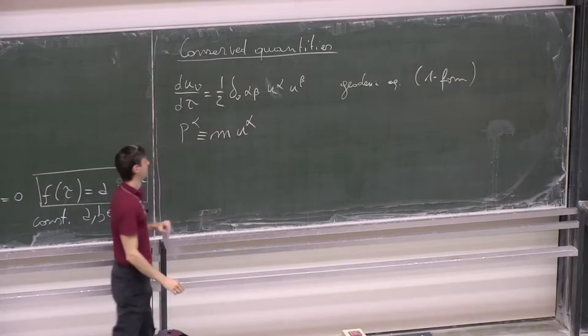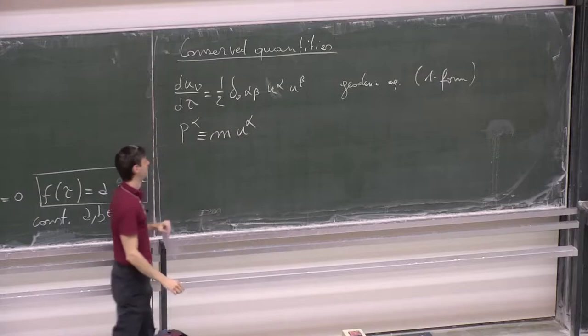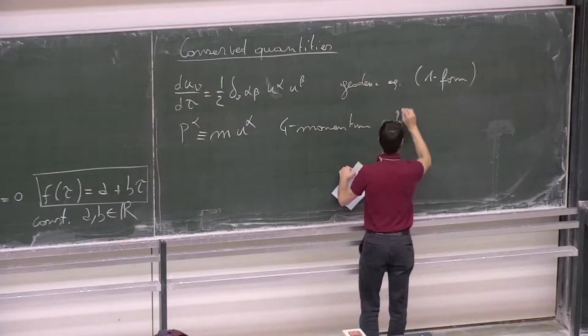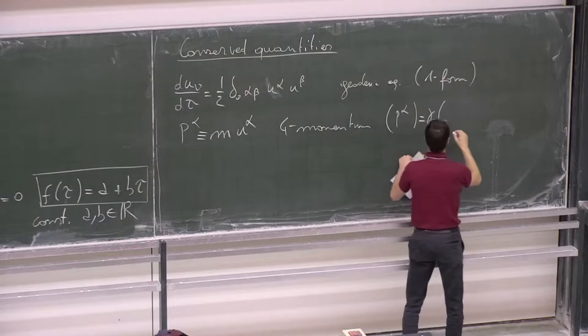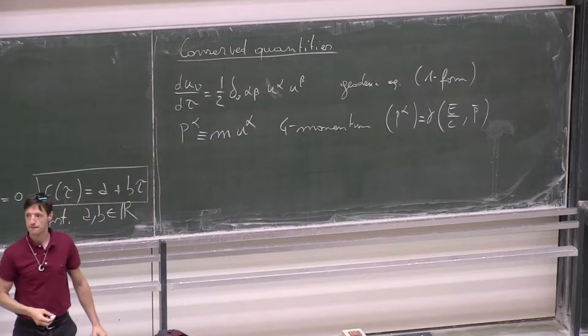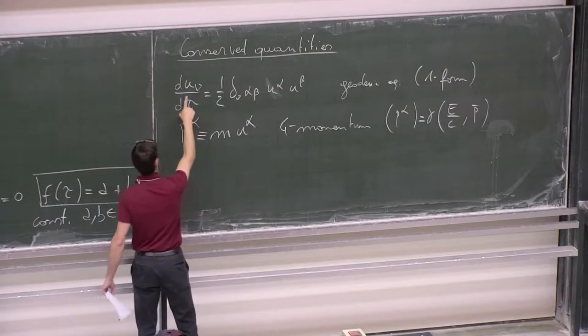We have p_alpha equals m u_alpha — that's the full momentum. The full momentum stores information through the gamma factor: the energy of a particle and its three-dimensional momentum. So this equation is going to tell you how the full momentum can change with respect to tau, if it is evolving as a function of the full momentum.